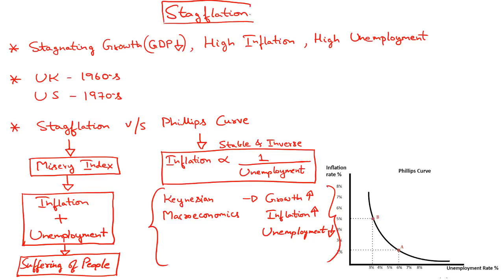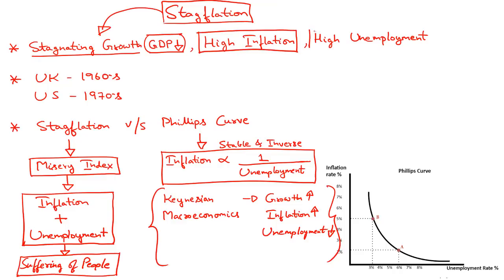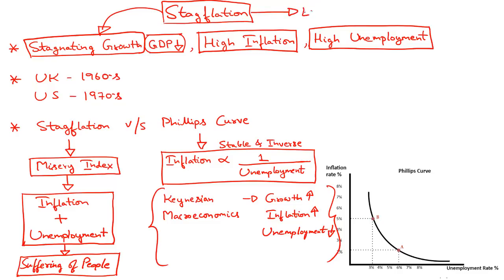The term stagflation refers to an economic condition wherein economic growth has started to stagnate. That is, GDP growth would be declining and this would be accompanied with persistent high levels of inflation and high rate of unemployment. When these three conditions exist simultaneously in our economy, we refer to the condition as stagflation. This condition is a recipe for disaster for any economy because it would take a number of years for the economy to bounce back and attain normalcy.